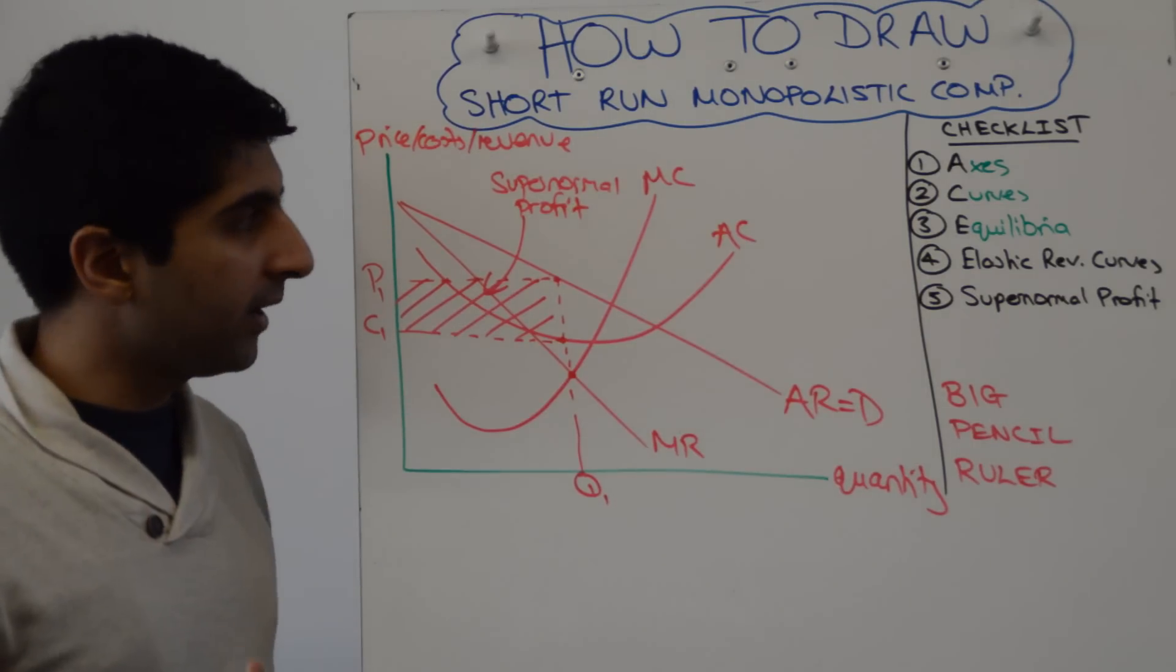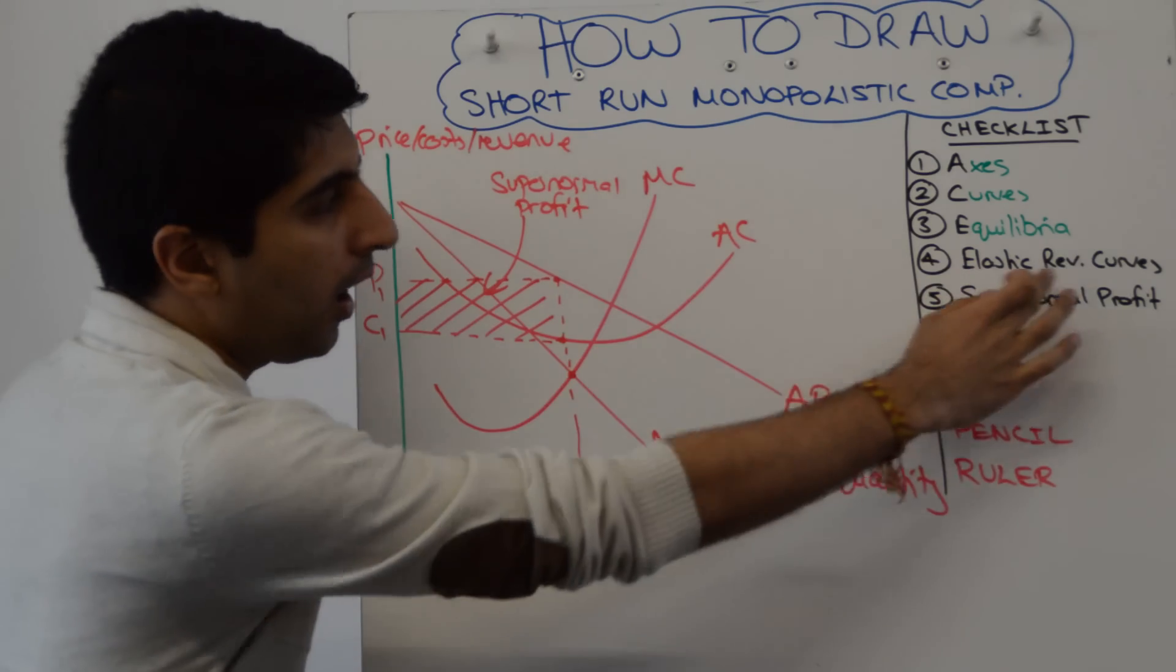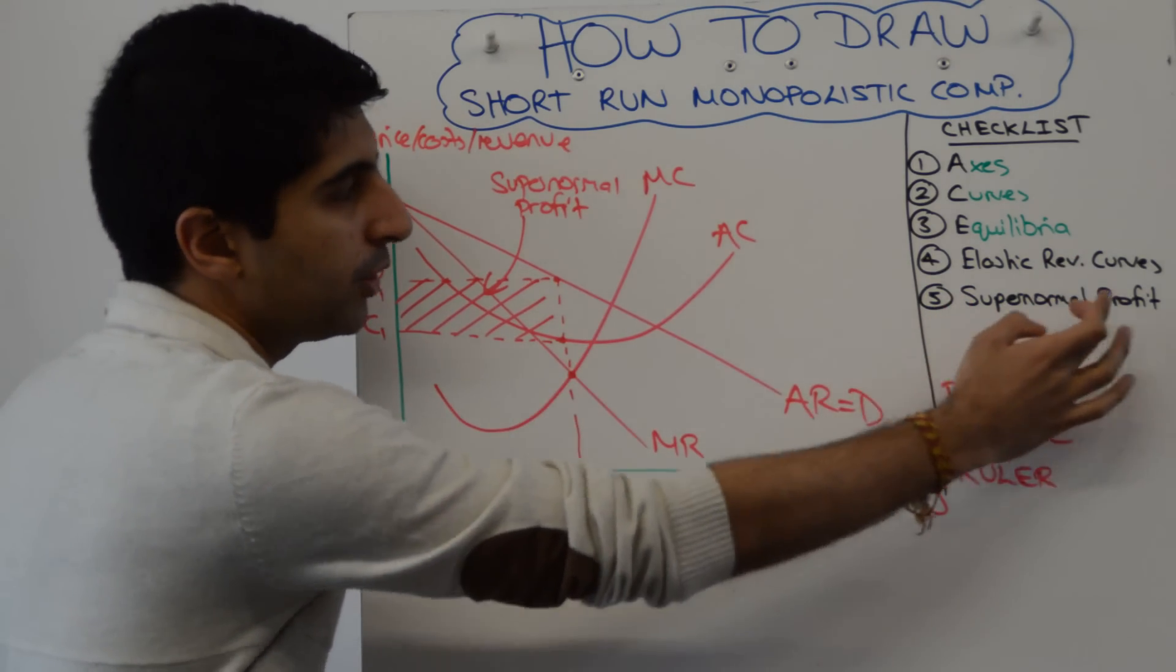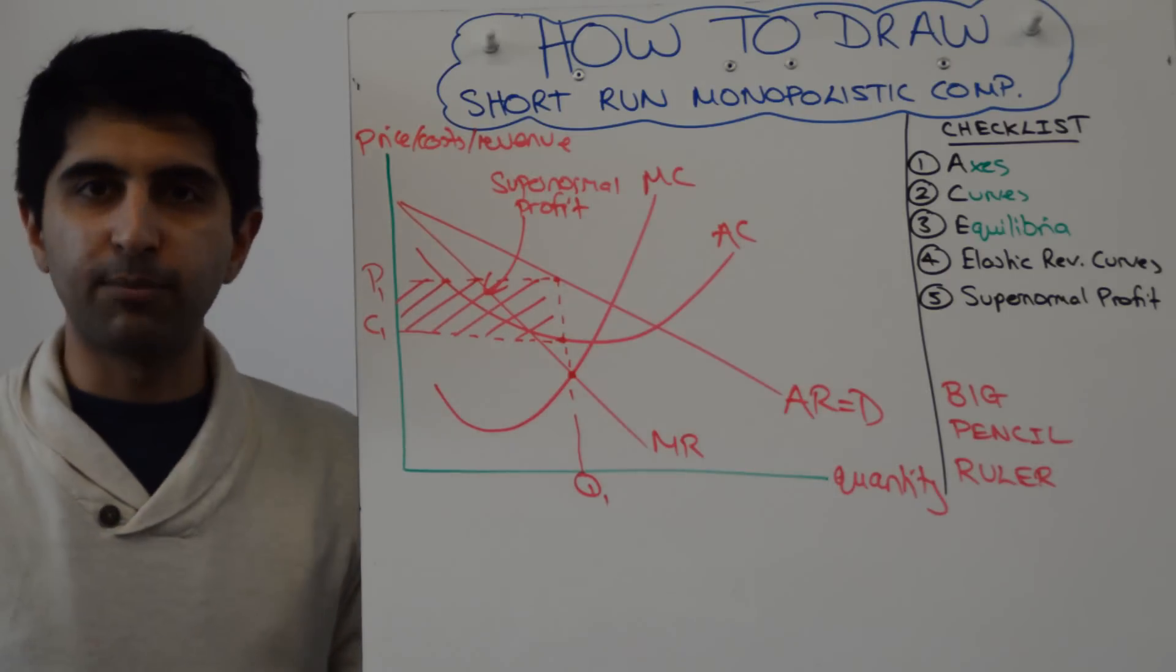And also the C1 on the y-axis is a useful thing to put on. Are our revenue curves drawn a bit shallower than we're used to? Yeah that's fine. Have we shown super normal profit? Yes we have. Beautifully labelled and clear.